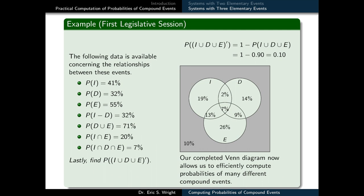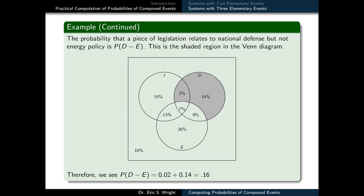Our Venn diagram is now completely labeled. For instance, we might want to know the probability that a piece of legislation relates to national defense but not energy policy — this is P(D but not E). We shade the part of D in our Venn diagram that doesn't overlap with E at all, then add up the probabilities in that region: 2% + 14% = 16%. So P(D but not E) = 16%.